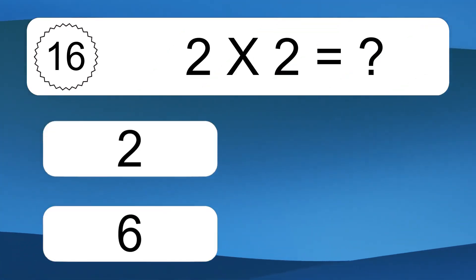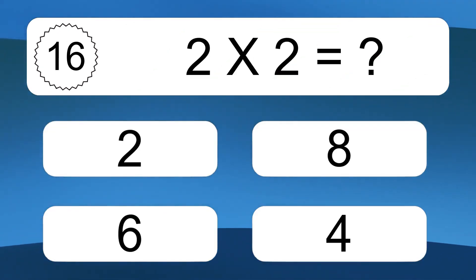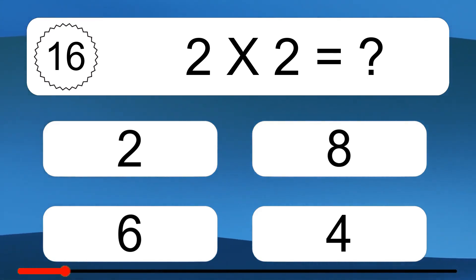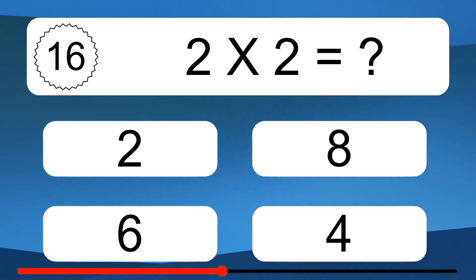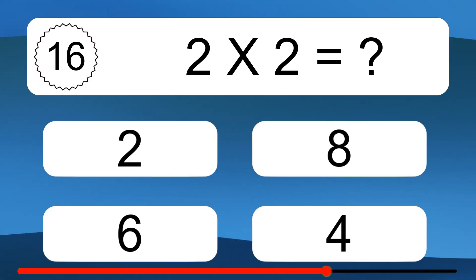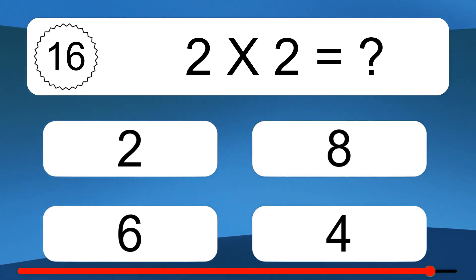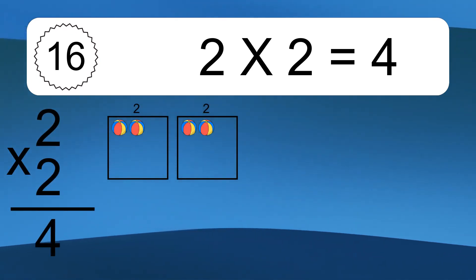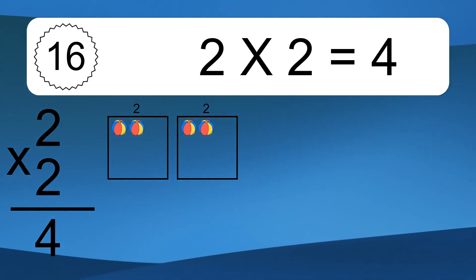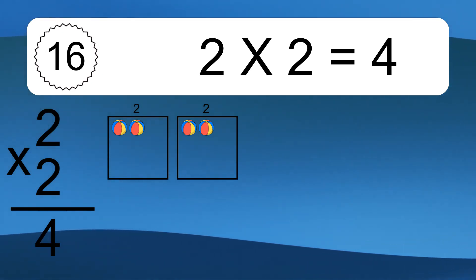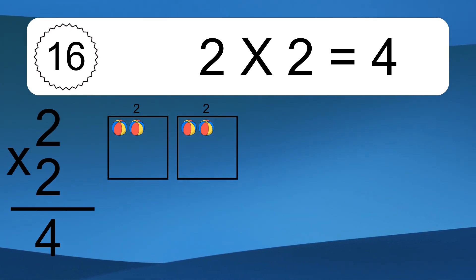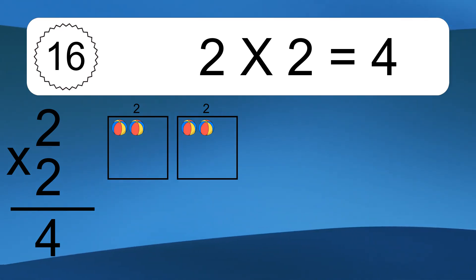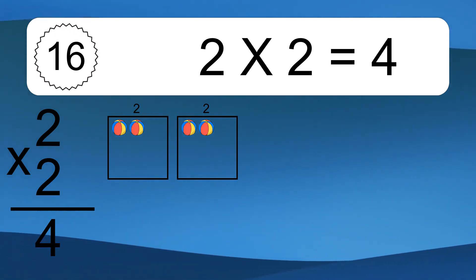Two times two equals what? Two times two equals 4. We have two boxes, and each box has two colorful balls inside. If you count all the balls in all the boxes together, you will have 2 times 2 balls. This equals 4 balls.